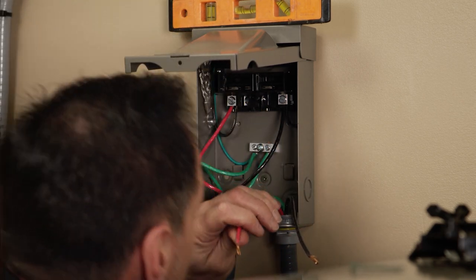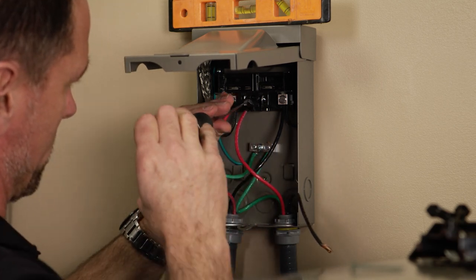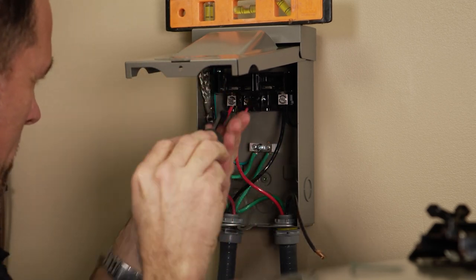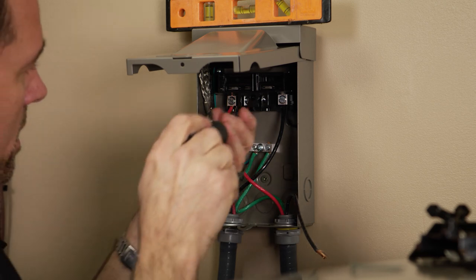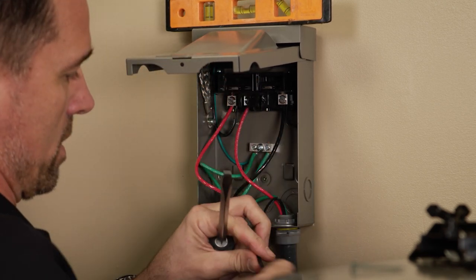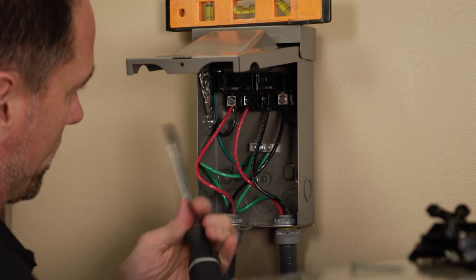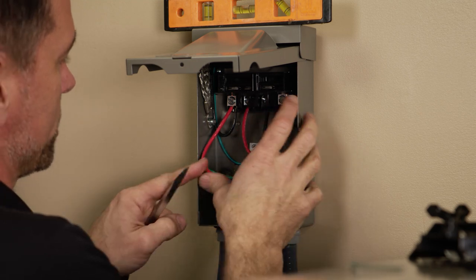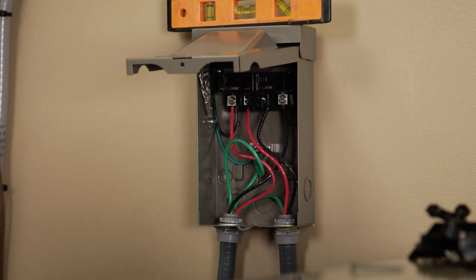And we'll hook up L1 of the load. And keeping the colors of the wires the same as possible. And that's all there is to installing the wires on our ICM 495.